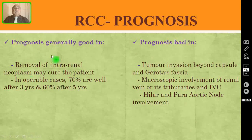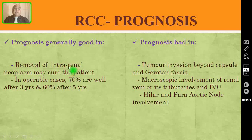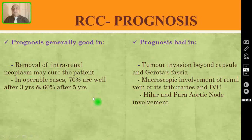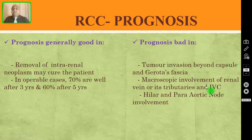Coming to prognosis: prognosis is generally good if you can remove the intrarenal neoplasm, which will entirely cure the patient. If the tumour is stage 1 or stage 2 and entirely within the renal parenchyma, prognosis is very good. In operable cases, 70% are well after 3 years and 60% are well after 5 years. Prognosis is bad if tumour invasion is beyond the renal capsule or Gerota's fascia, with macroscopic involvement of the renal vein, its tributaries, or the IVC, or involvement of hilar or para-aortic lymph nodes.